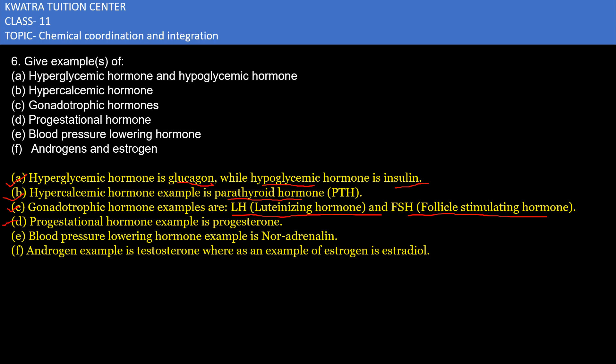The next one is the progestational hormone, and the example for this is progesterone. For blood pressure lowering hormone, the example is noradrenaline. The last category is androgen and estrogen — the example for androgen is testosterone, while the example for estrogen is estradiol. That was the answer for the following question.